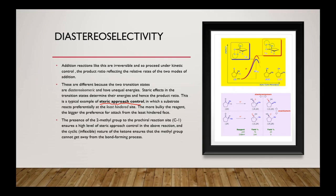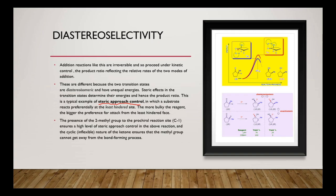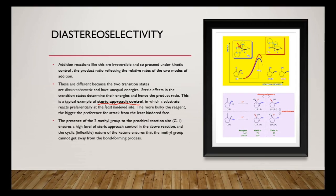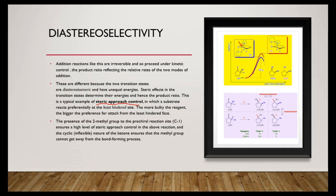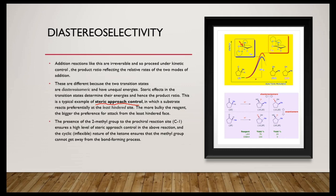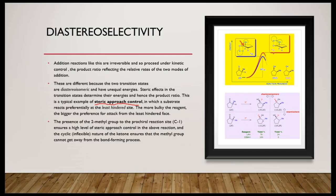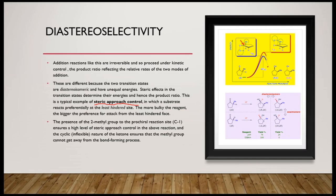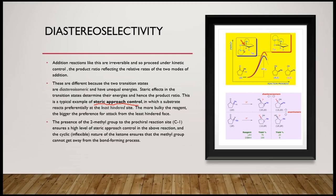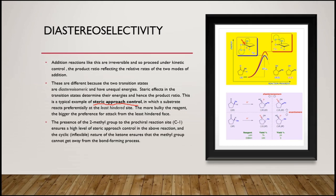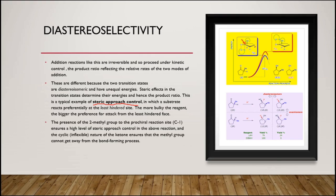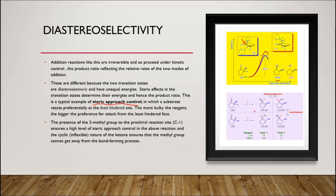The presence of the methyl group at the second position to the prochiral site C1 ensures a high level of steric approach control in the above reaction, and the cyclic nature of the ketone ensures that the methyl group cannot get away from the bond-forming process. This energy diagram gives a clear picture of why the hydride prefers to attack from one side and not from the top, resulting in a lower-energy transition state and the observed major product.